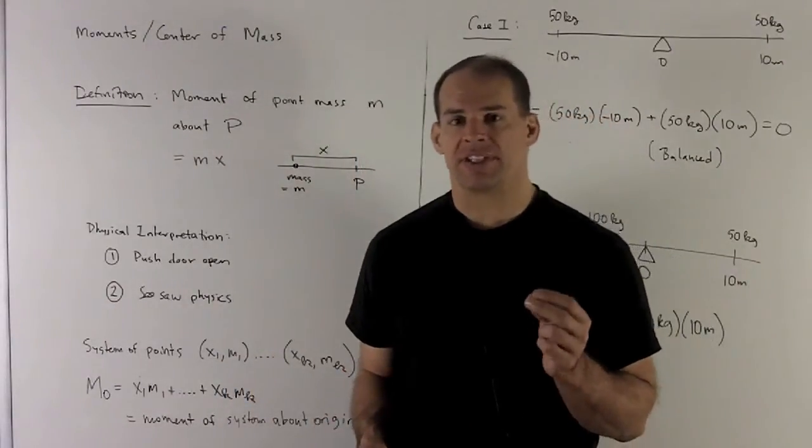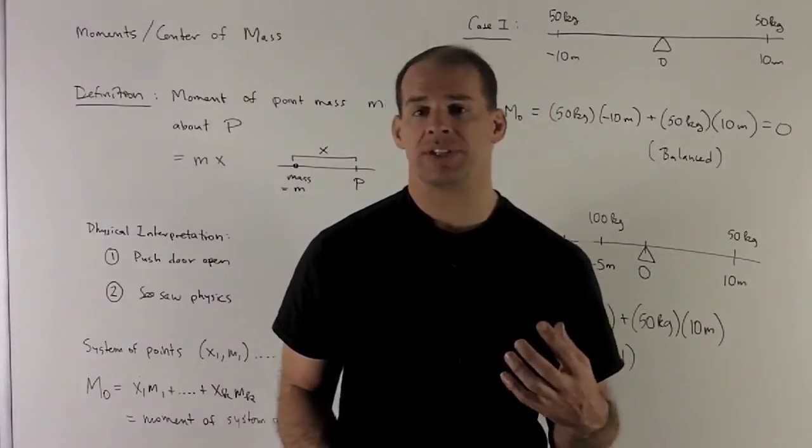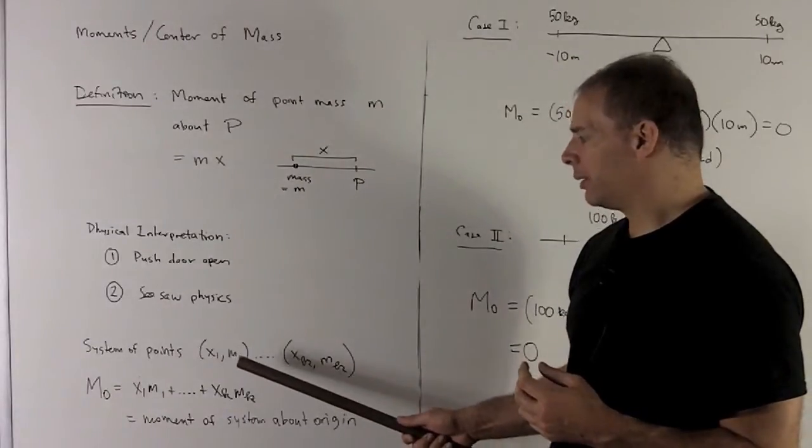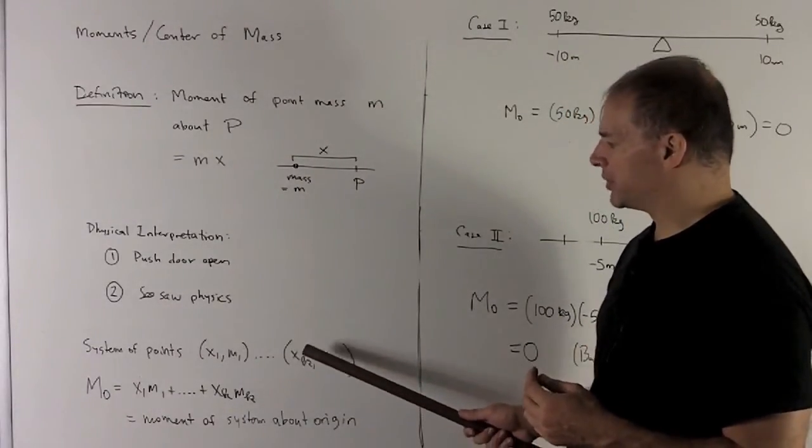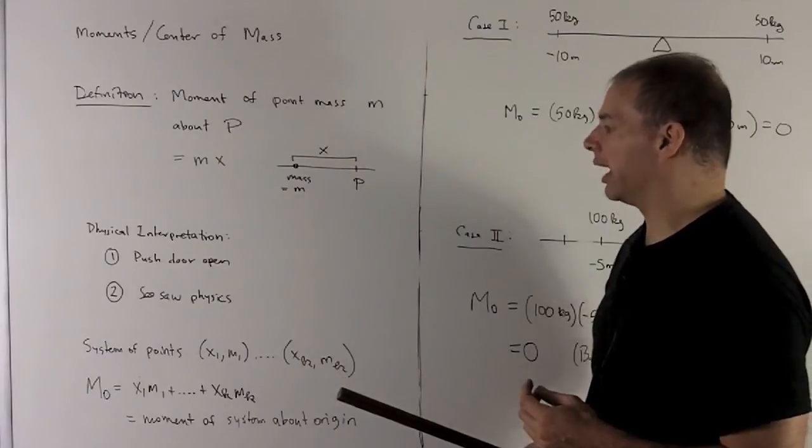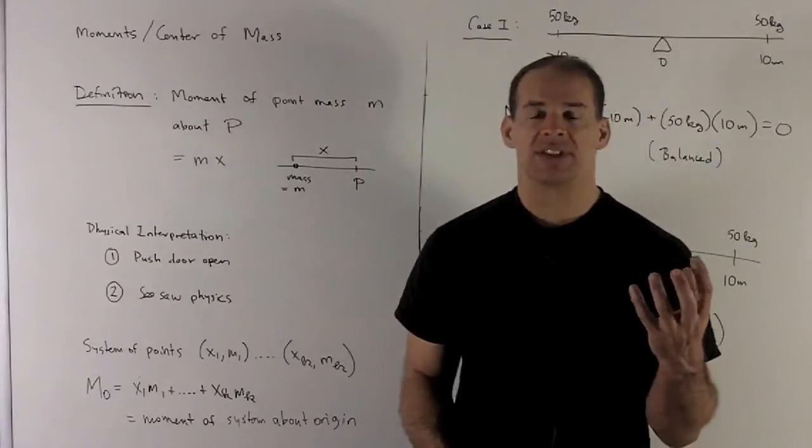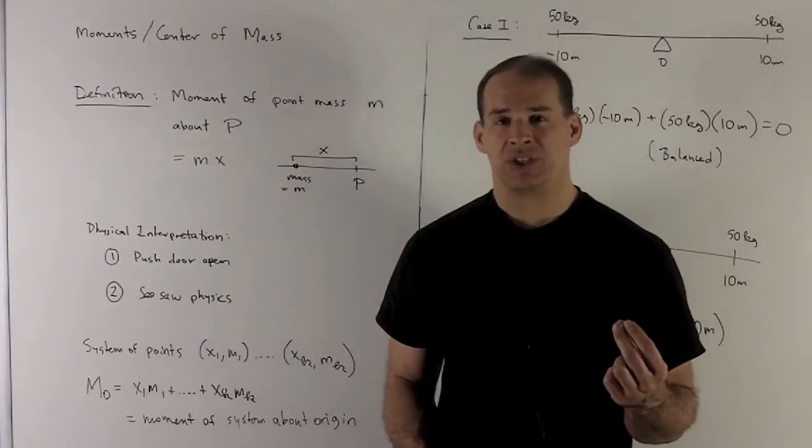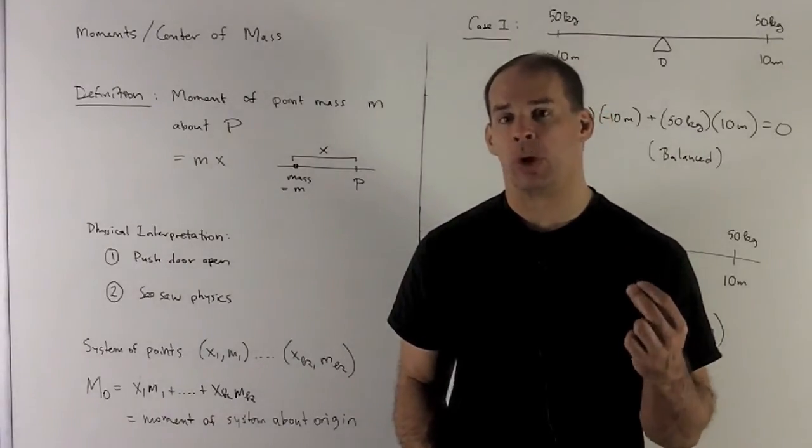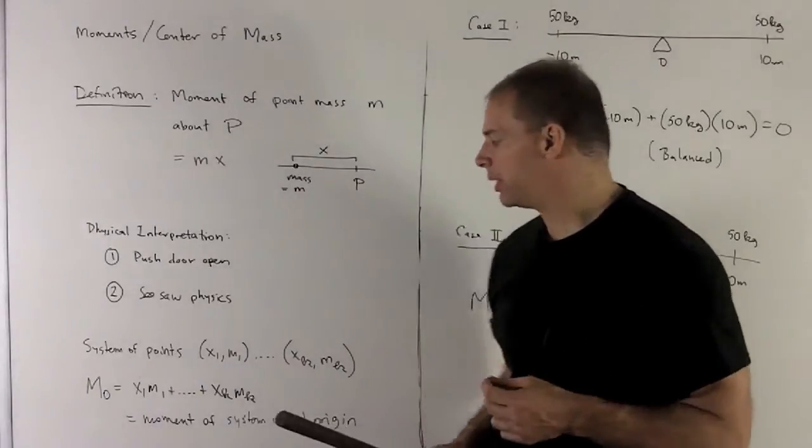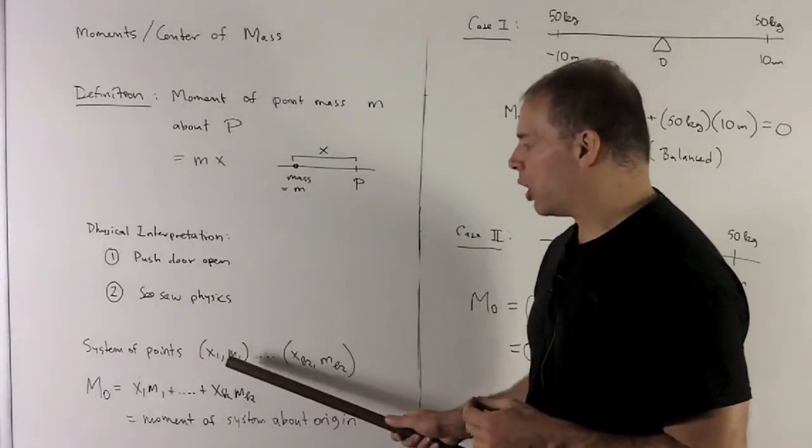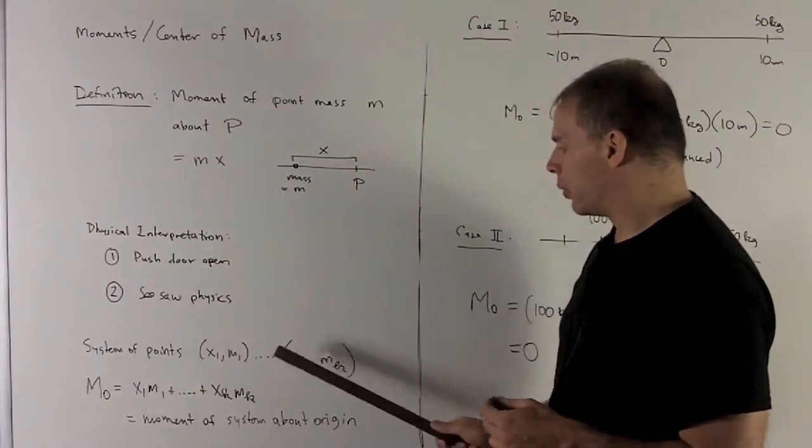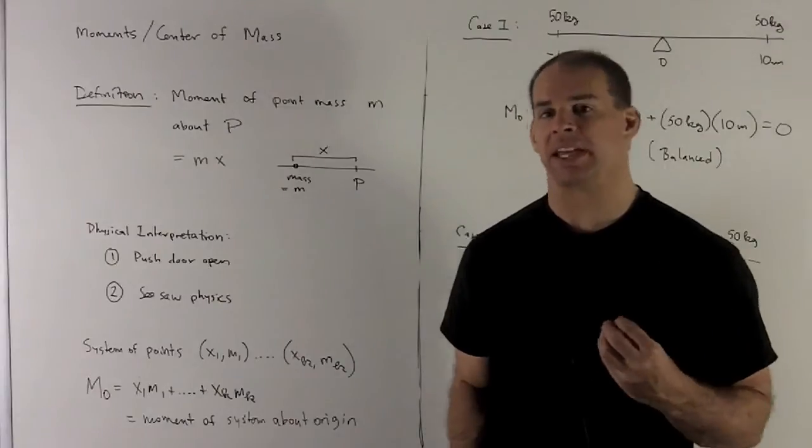So instead of a single point let's move to a system of points. Position at x1, mass is m1, and then we go through up through position xk, mass mk. For the system, the way we go about getting a moment for the entire system at once is just to add up the moments for each point mass that is in the system. So that's just saying each of these points will have moment m1x1 all the way up through mkxk, and then we just add them together.